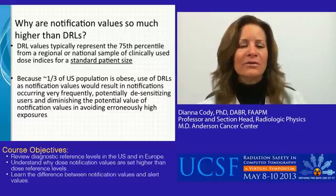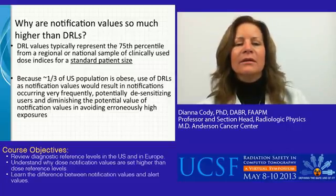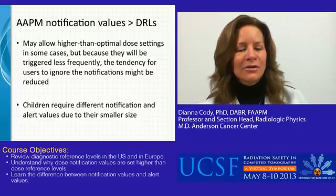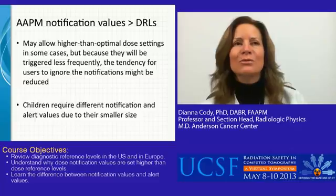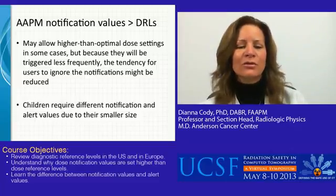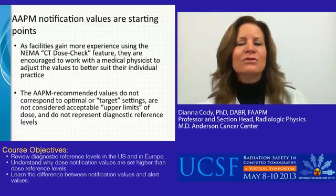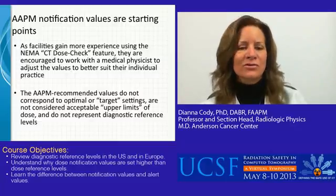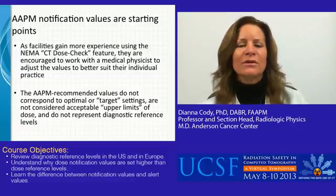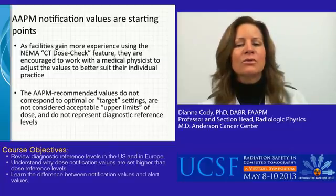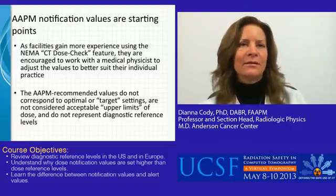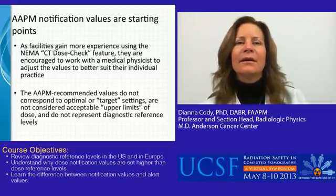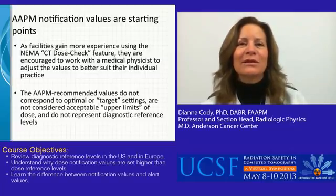They're higher than the diagnostic reference levels because diagnostic reference levels are really set for typical patient size, and not necessarily for the larger patients that we so often see in our CT clinics — especially in the U.S. where about a third of our population is considered obese. These slightly higher notification values may allow higher than optimal dose settings in some cases, but because they'll be triggered less frequently, they should be ignored less often. Certainly children require different notification and alert values due to their smaller size. We should consider those values as starting points and mere suggestions. We totally expect sites to adjust those values over time, working with their own medical physicists to better adjust them to their particular individual practices and patient populations. These values are not to be considered optimal, target, or upper limits — they are simply starting point suggestions. If you have any more questions on this material, I encourage you to contact me directly. Thank you very much.